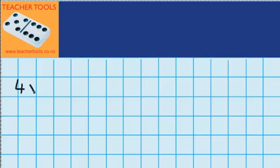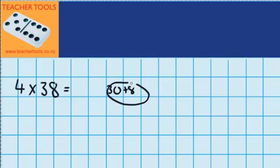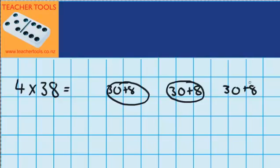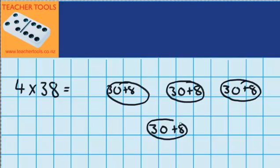I've got four groups with 38 sweets in each group. You know that I can display that as one group of 30 plus 8, another group of 30 plus 8, another group of 30 plus 8, and one more group of 30 plus 8. So you can see that in each of these four groups I've got 38, but I've just split it up to show an amount of tens and an amount of ones.